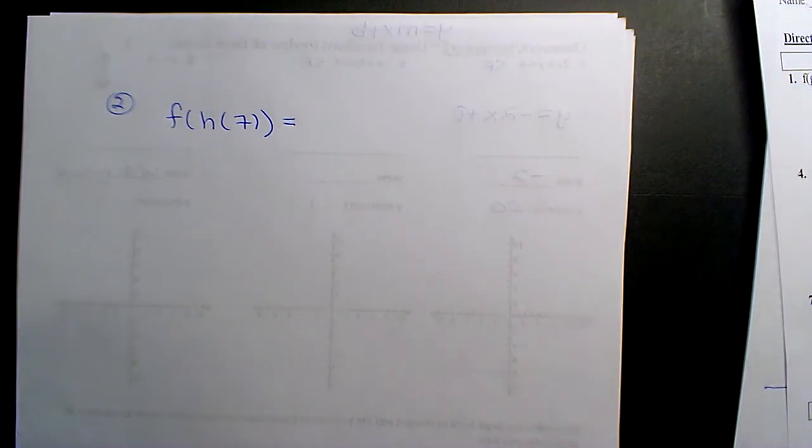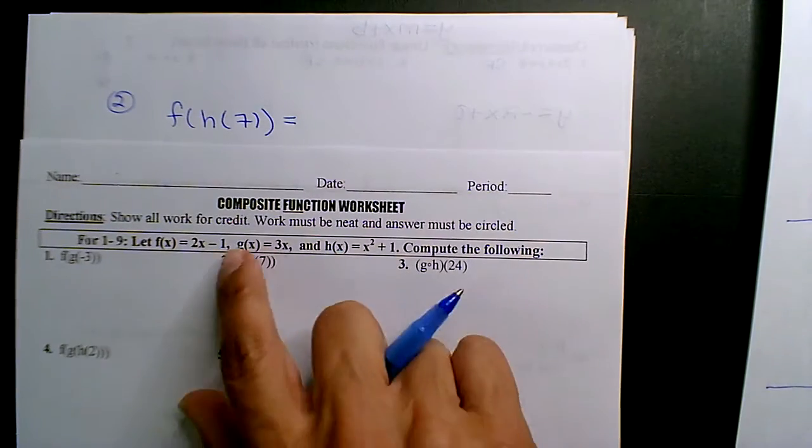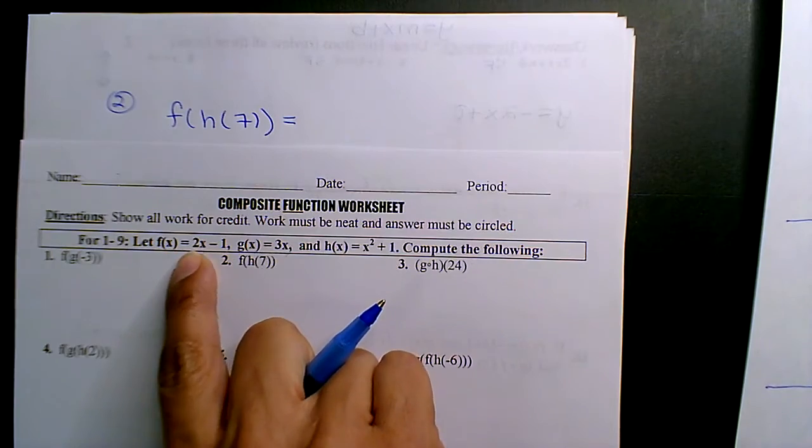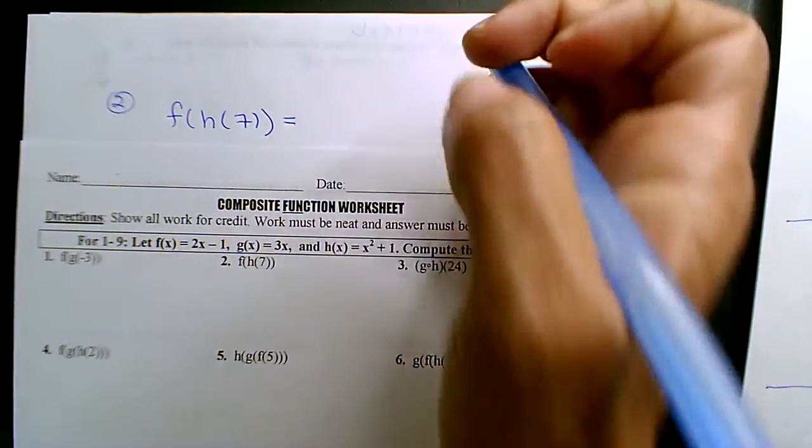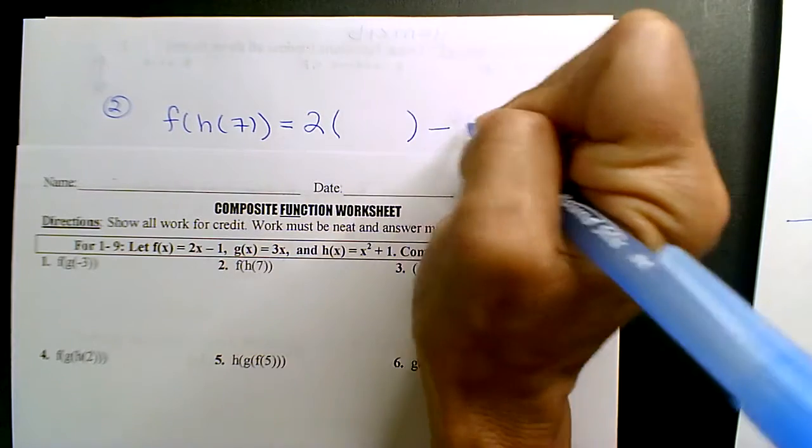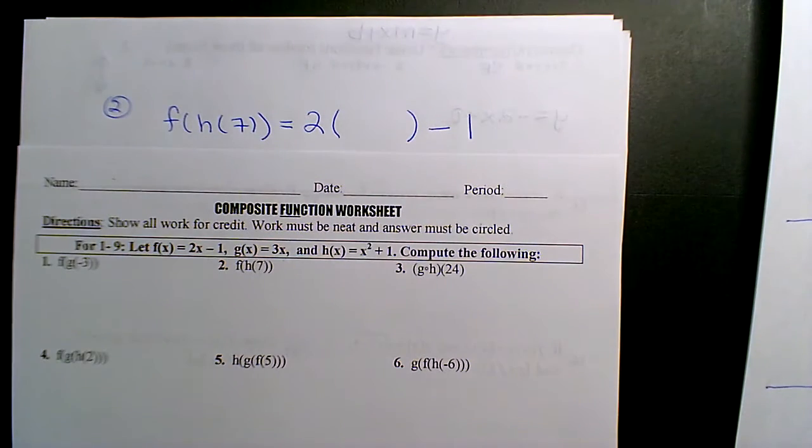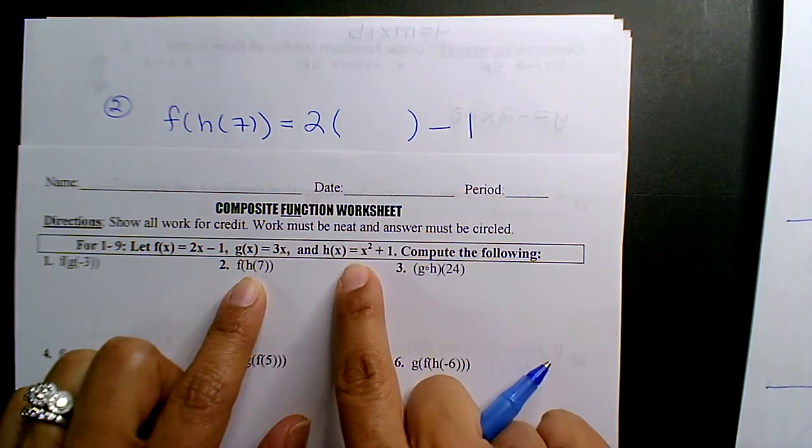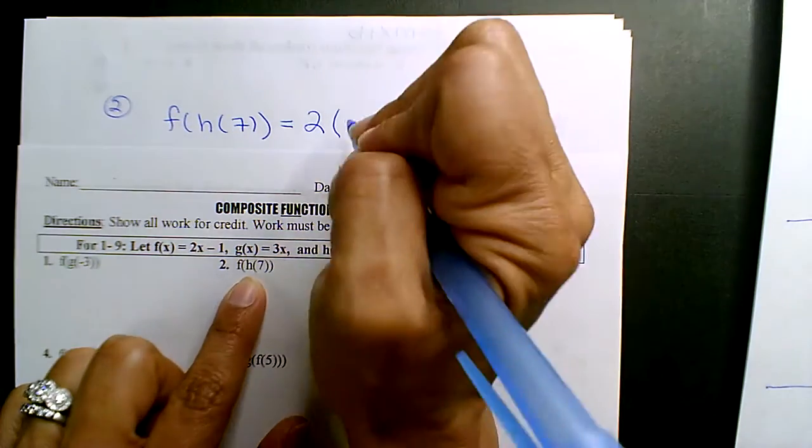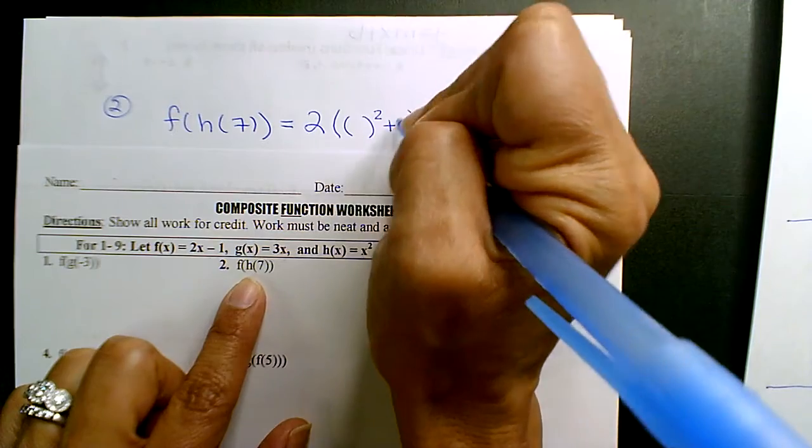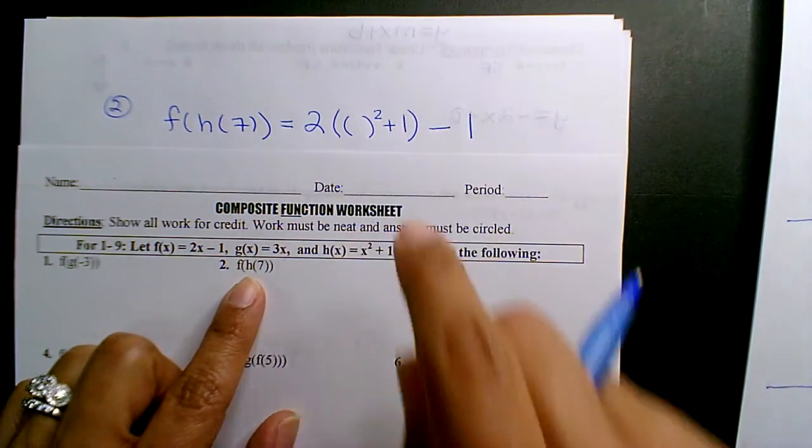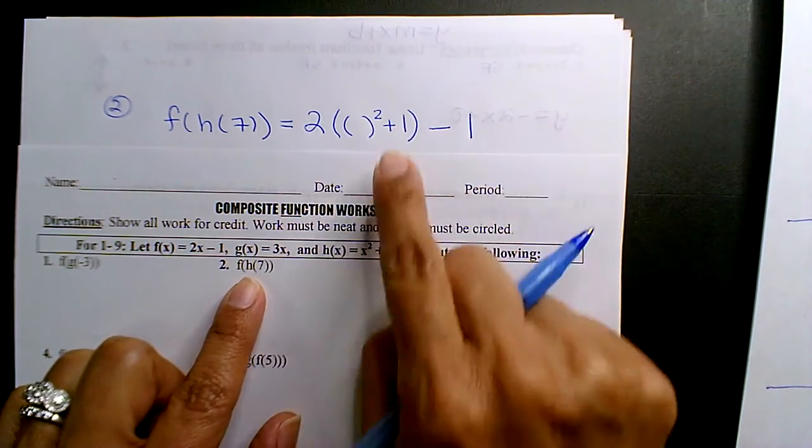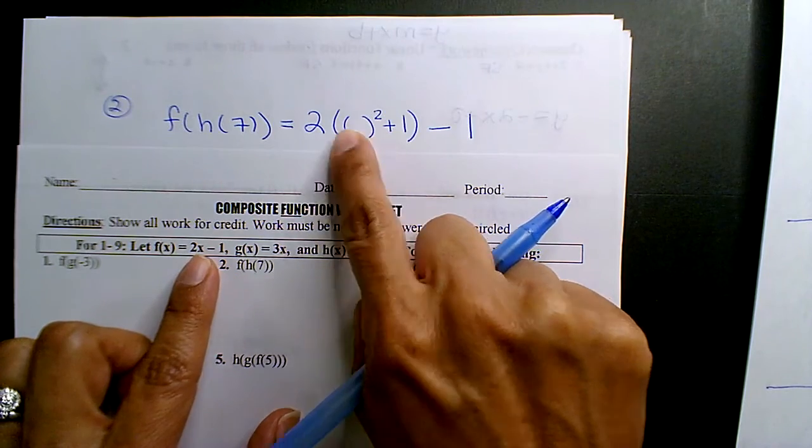All right, look, the function f is 2x minus 1, but instead of x I'm leaving a blank. Wait, wrong problem. I'm substituting the h function, which is x squared plus 1. So I threw the h function, x squared plus 1, in place of the 2x minus 1 for x.